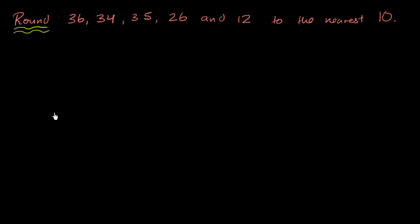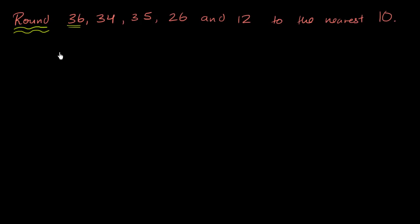So here we're going to actually think about what rounding is. We're going to round each of these numbers — 36, 34, 35, 26, and 12 — to the nearest 10. That essentially says: take each of these numbers and find the multiple of 10 that it is closest to.